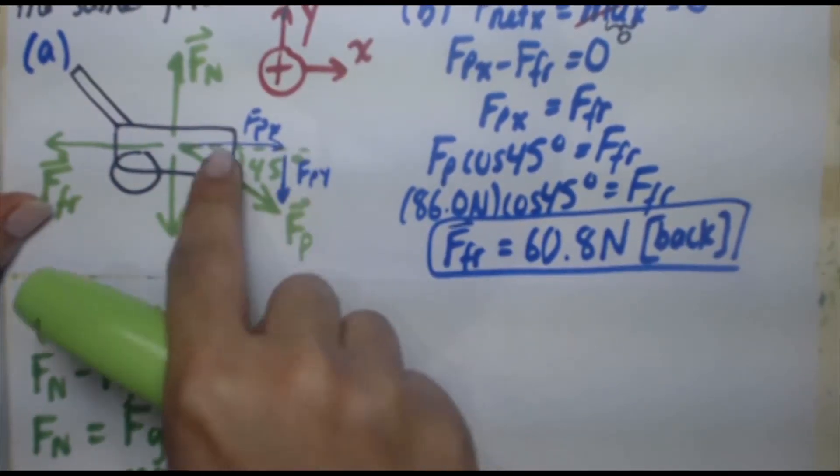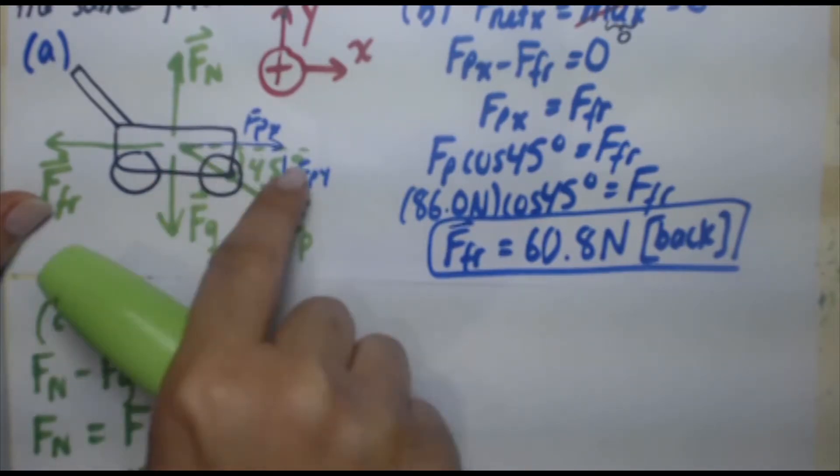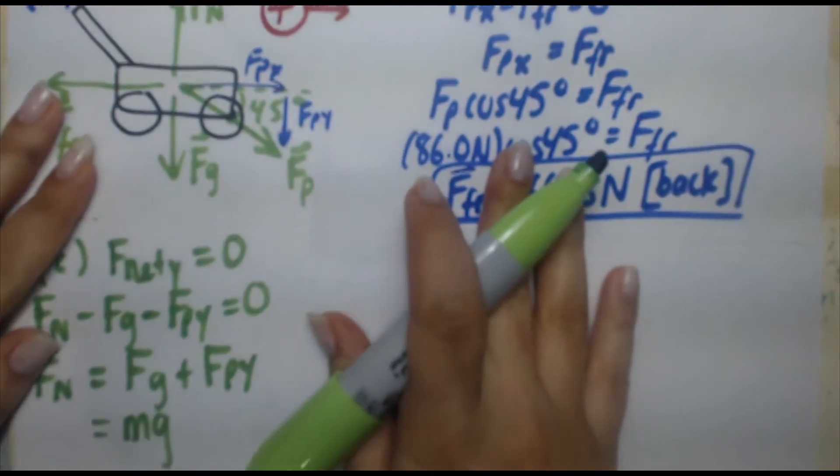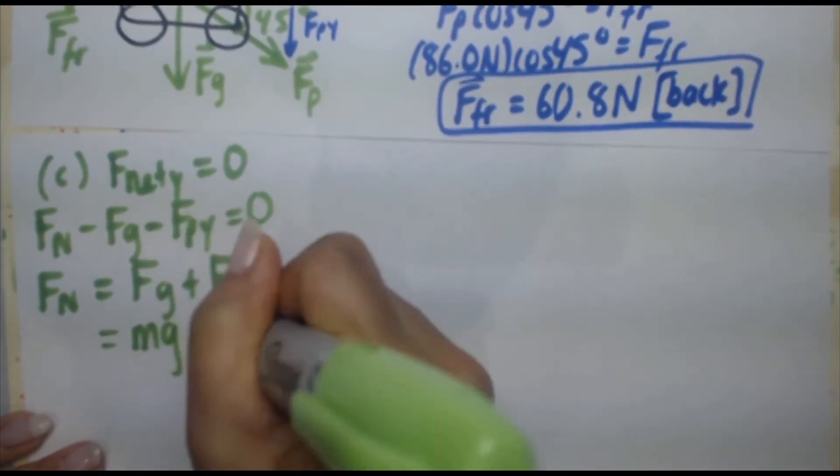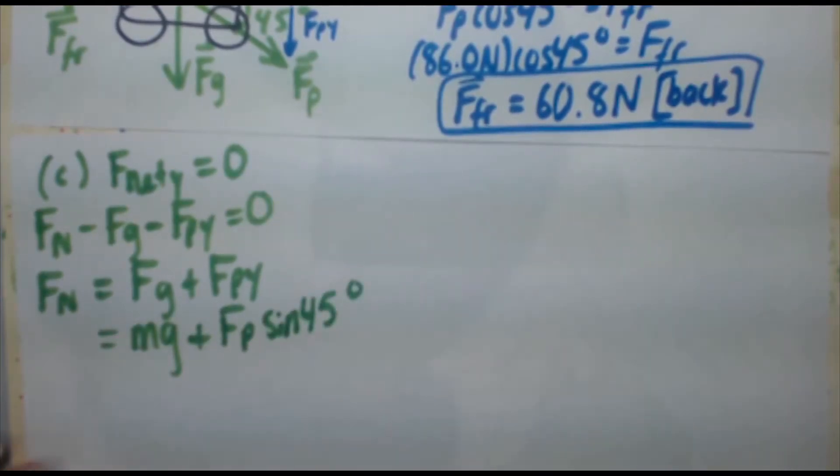So the hypotenuse times the sine of the angle is fpy. So plus fp sine 45 degrees. Okay, so now we just have to start plugging in our values.